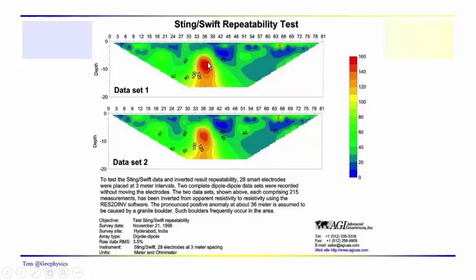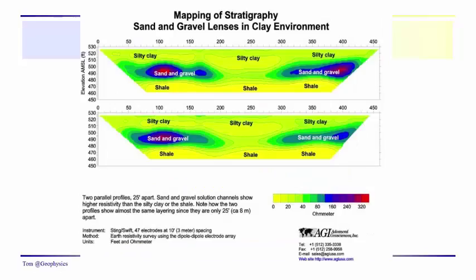This example shows a repeatability test — when we run the same survey twice in the same area, we get very similar results. You can see some necking in these contours, but we can see this granite boulder very well. It shows up nicely in both data sets and the contours are remarkably similar. So it's a fairly repeatable process — no problem seeing a granite boulder.